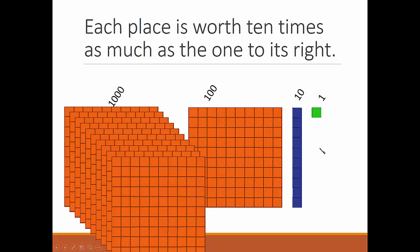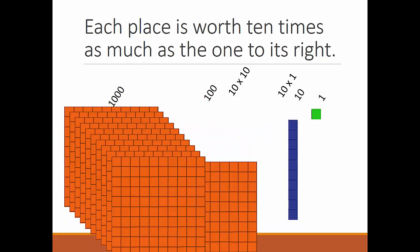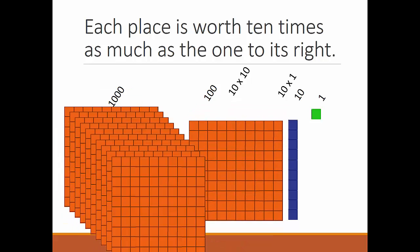Each place is always worth ten times as much as the one to its right. So one times ten is ten. Ten tens, ten times ten, make a hundred. Ten times a hundred, make a thousand, and so on.